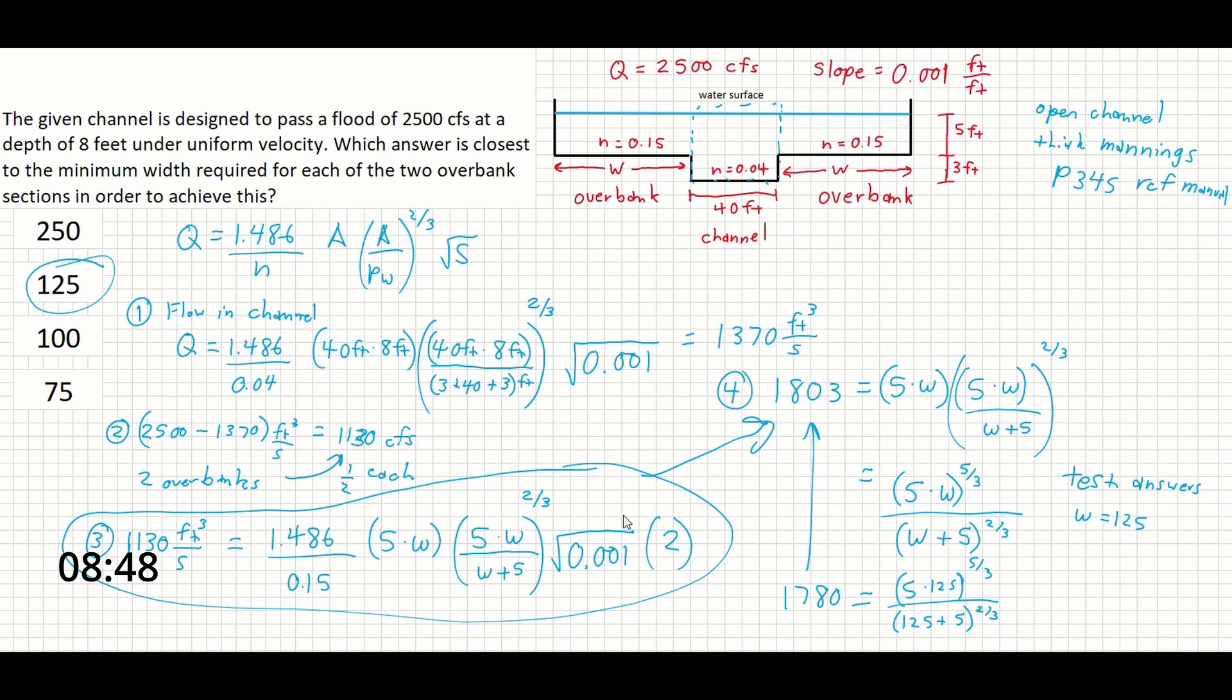So our answer here is 125 feet for the width of each overbank section. Because remember, we multiplied the entire Manning's equation over here by 2 to account for each overbank.